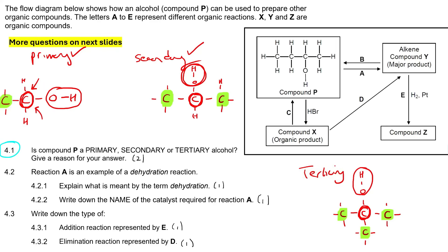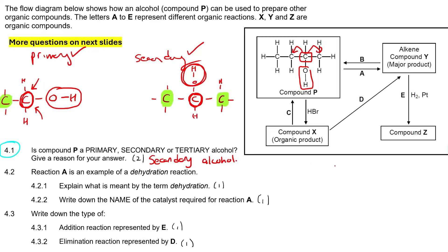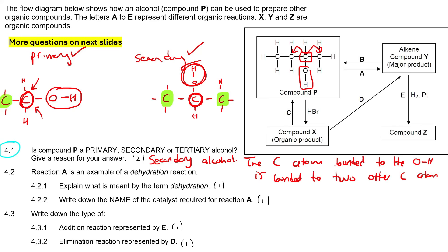You can also use this technique if they ask you for primary, secondary, and tertiary haloalkanes — it's the same thing. So they said: is P secondary? If we look at P, it's got an OH over here. Look at the carbon touching it — how many carbons are touching that carbon? There's one over there and one over there. So that would be a secondary alcohol. They also said give a reason: the carbon atom bonded to the OH is bonded to two other C atoms.